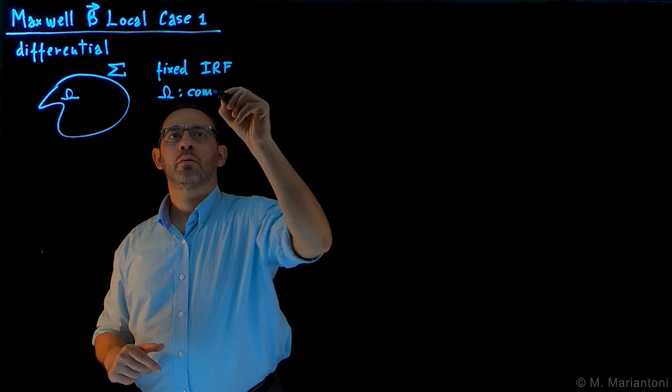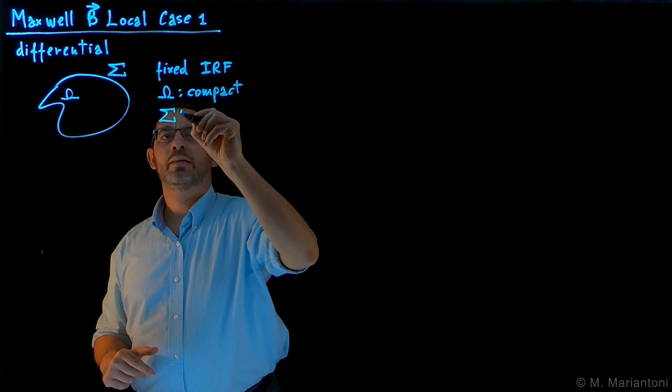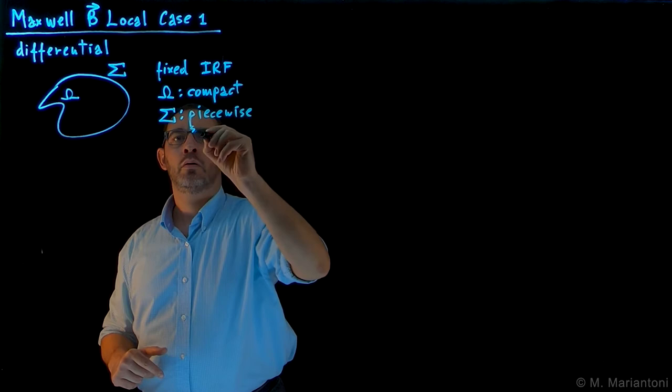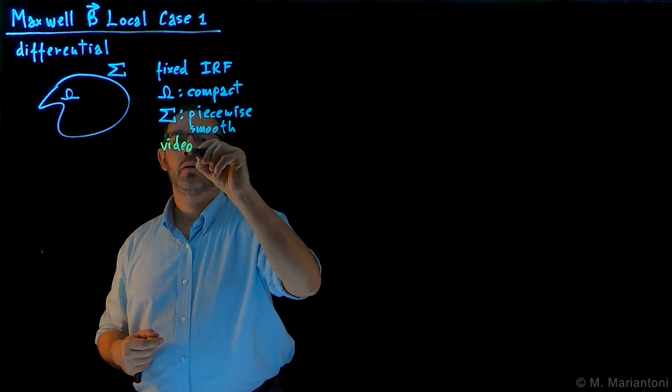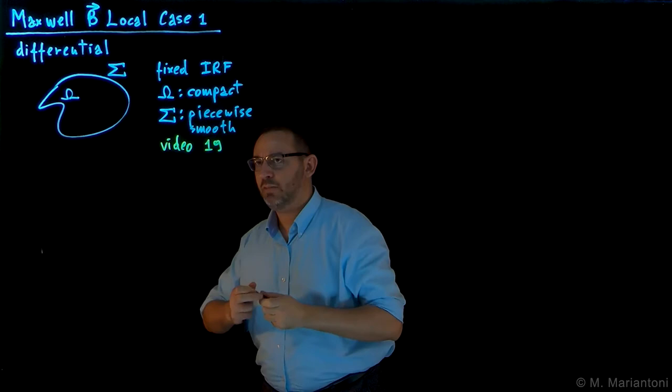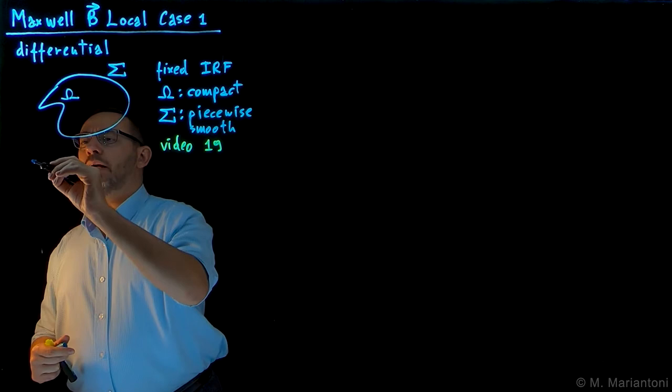We also hypothesize that capital Omega is a compact domain and capital Sigma is piecewise smooth. I remind you to look at video 19 for a more detailed description of these definitions. We already used them in video 19 for the electrostatic field E.